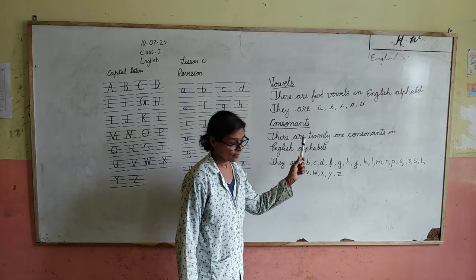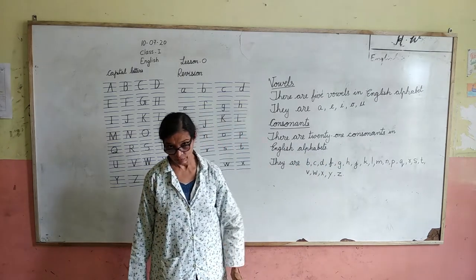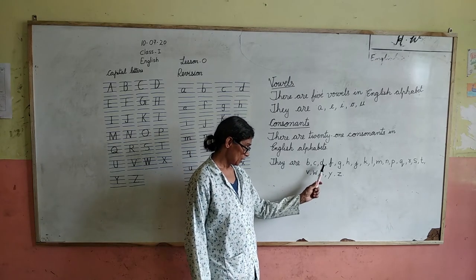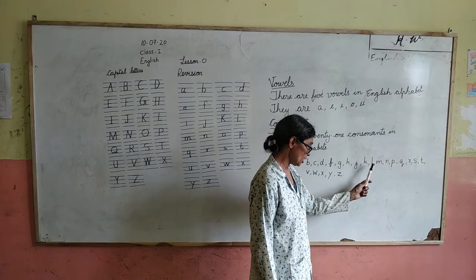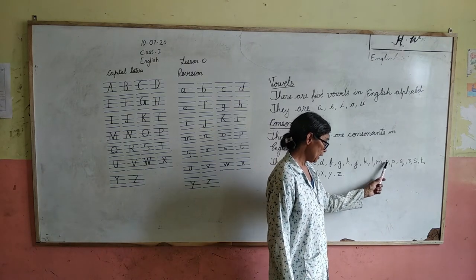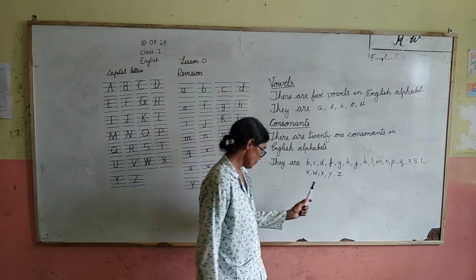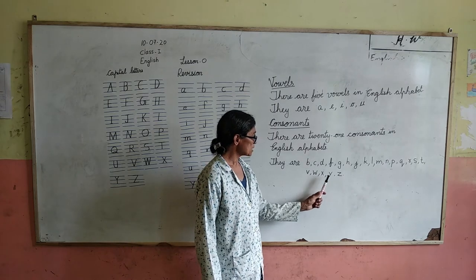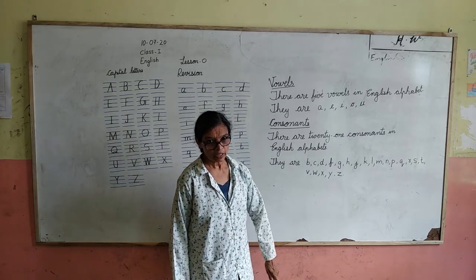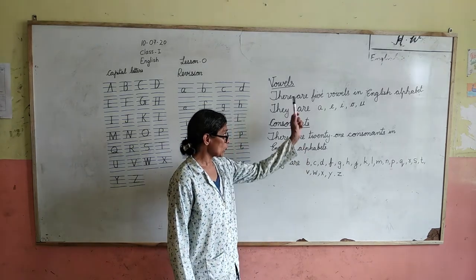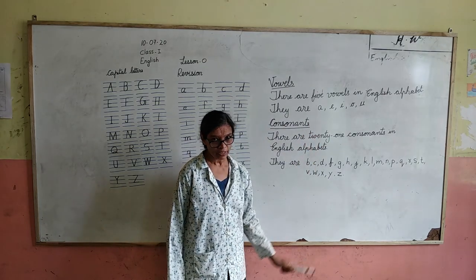Okay, and consonants. There are 21 consonants in English. They are B, C, D, F, G, H, J, K, L, M, N, P, Q, R, S, T, V, W, X, Y, Z. They are 21 consonants in English. Total: 5 vowels and 21 consonants.